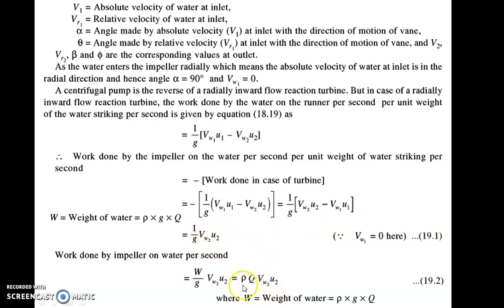The intermediate power is the impeller power Rho Q Vw2 U2, and after that there is the final power, that is the manometric power or manometric head, given by Rho G Q HF. You have to remember three powers, just like that of a turbine. For a turbine we have seen input power, runner power, and output power which is shaft power. In this case the shaft power is the input power, then there is impeller power, and then there is manometric power.